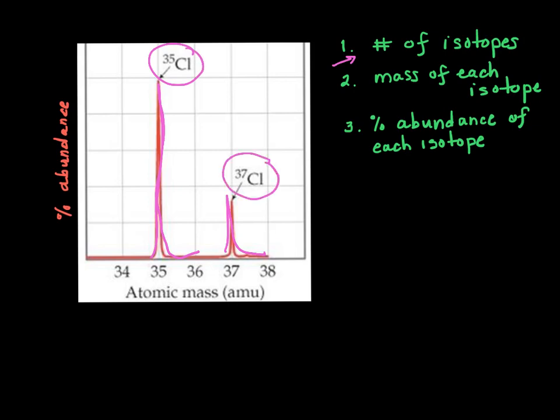It gives us the mass of each isotope, and that's on the x-axis here, and these are in amu. So there's two isotopes, chlorine-35 and chlorine-37.